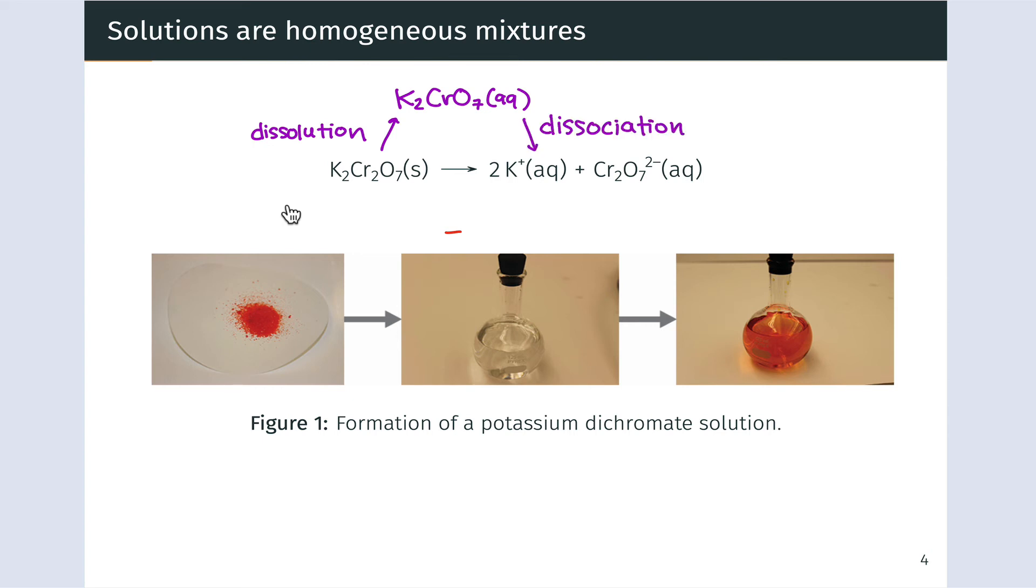Dissociation is the separation of the potassium and dichromate ions into these separate aqueous dissolved components. Those are conceptually distinct. We'll come back to this distinction between dissolution and dissociation at a few different points.